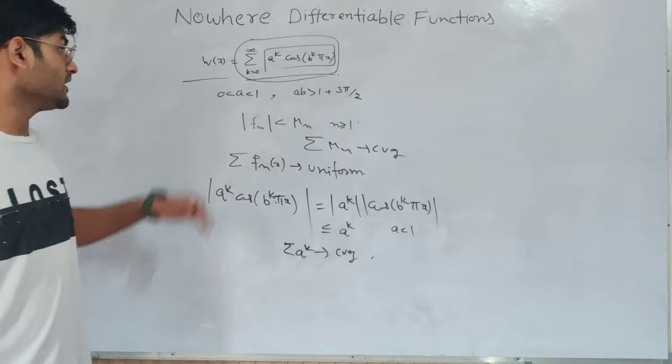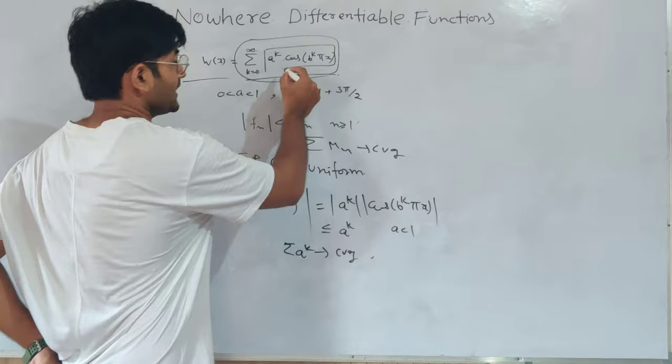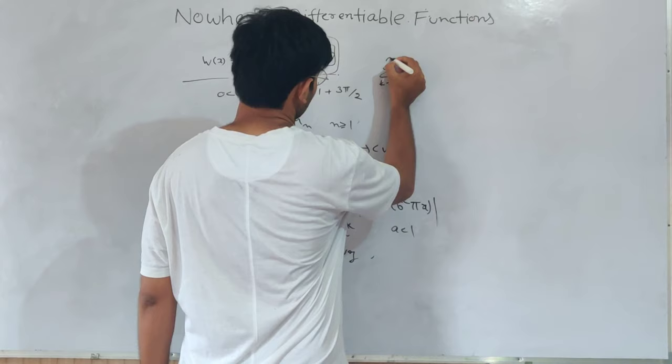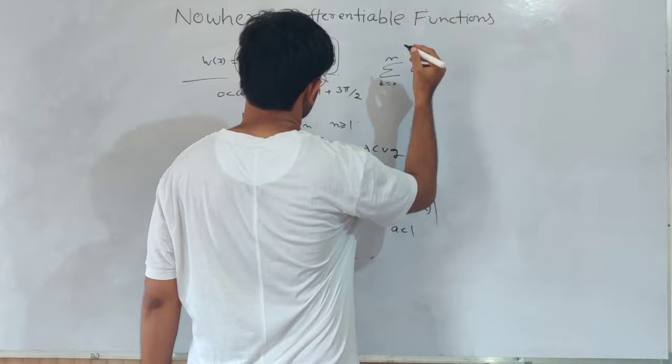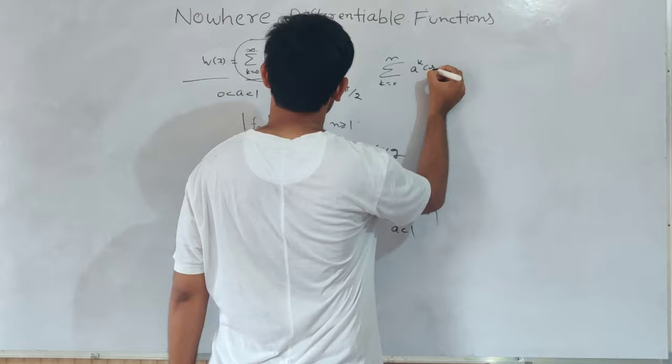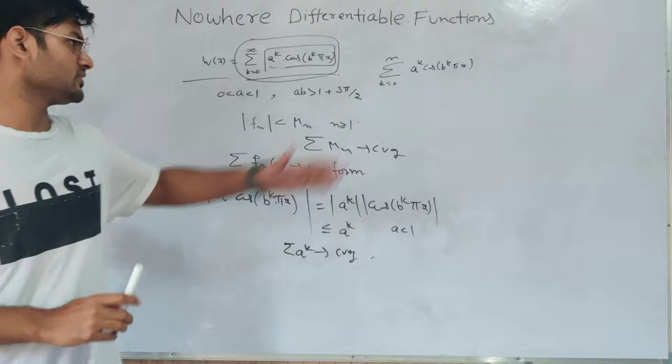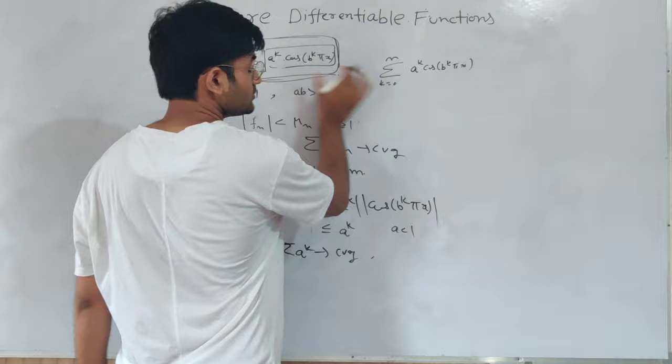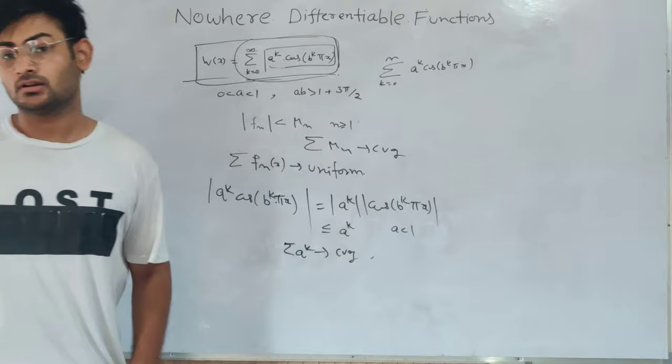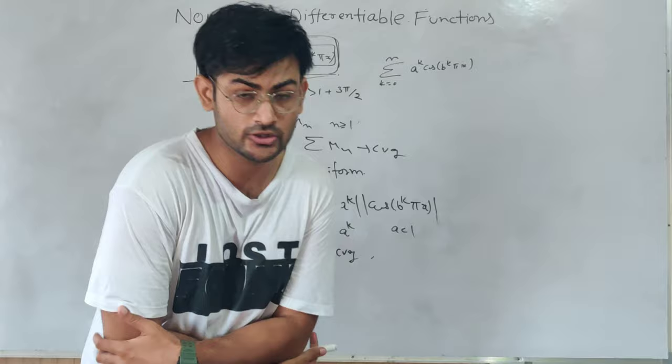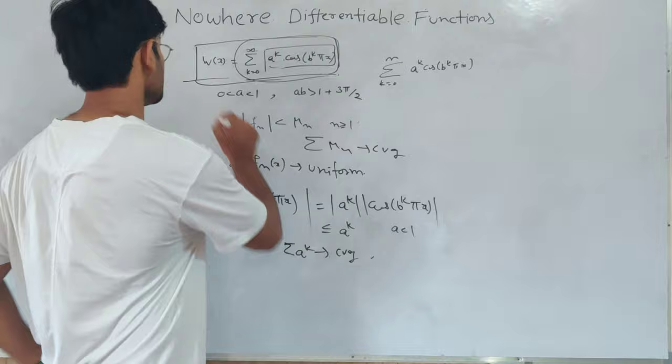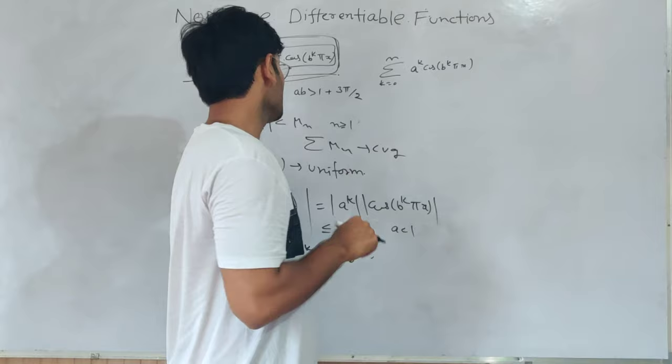The first term is continuous, the second term is continuous, plus the sequence. We will take the sequence from 0 to n and then the sequence converges, which will converge uniformly by M-test. But I have studied a theorem that if a sequence of continuous functions uniformly converges, then the limit is continuous. What will be the limit? The limit will be the Weierstrass function, and the Weierstrass function is continuous.